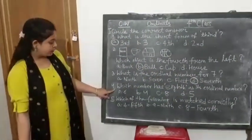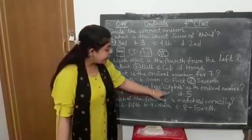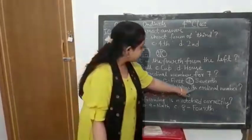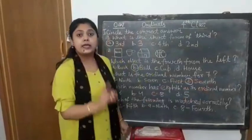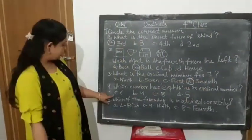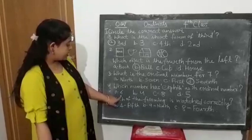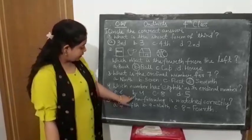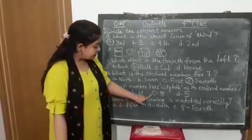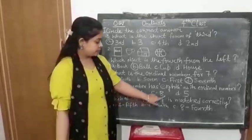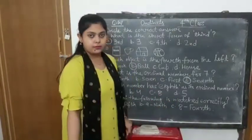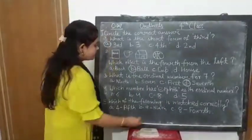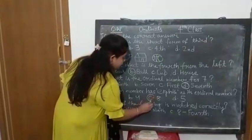Now number 4. Which number has 8 as its ordinal number? See the options: A: Six, B: Four, C: Eight, D: Five. So what is the answer here? C, option C.